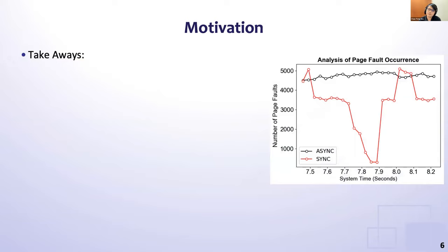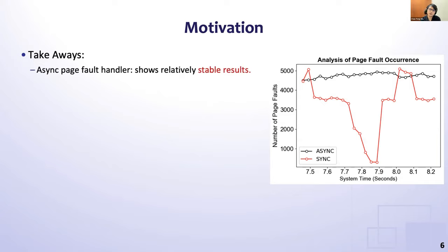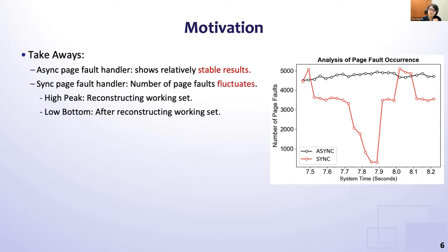We ran an experiment comparing synchronous and asynchronous page fault handling on the same datasets. Using the asynchronous page fault handler shows relatively stable results in terms of the number of page faults, because the most frequently used pages in each process can be kept in memory. On the other hand, if the system adopts synchronous page fault handling, the number of page faults fluctuates severely over time. The peak is caused when processes are first scheduled to run, where most of their working sets have been kicked out due to working set contention.